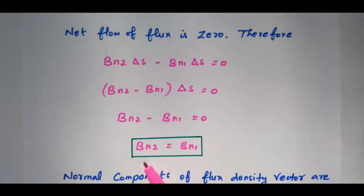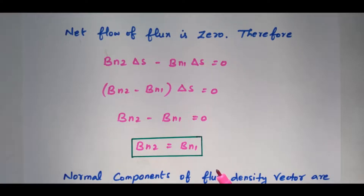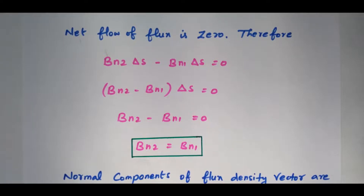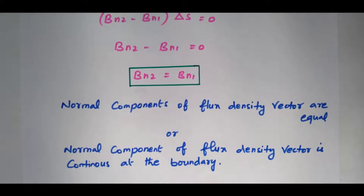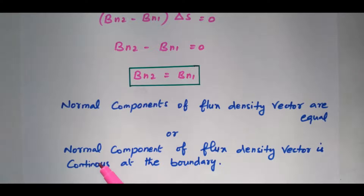The flux density entering and leaving are both equal — there is no change in magnitude and direction. This is because there is no charged sheet available at the boundary. If any charge were available at the boundary, it would cause deviation in magnitude and direction. Since there is no charged sheet, we directly get these two are equal. The statement is: the normal component of flux density vectors are equal, or equivalently, the normal component of flux density vector is continuous at the boundary.